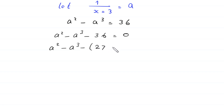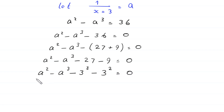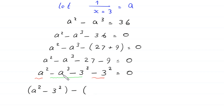Moving 36 to the left-hand side: a² minus a³ minus 36 = 0. We note that 36 = 27 + 9, so this becomes a² minus a³ minus 27 minus 9 = 0, which is a² minus a³ minus 3³ minus 3² = 0. We group these as (a² minus 3²) and negative (a³ plus 3³), giving (a² - 3²) minus (a³ + 3³) = 0.